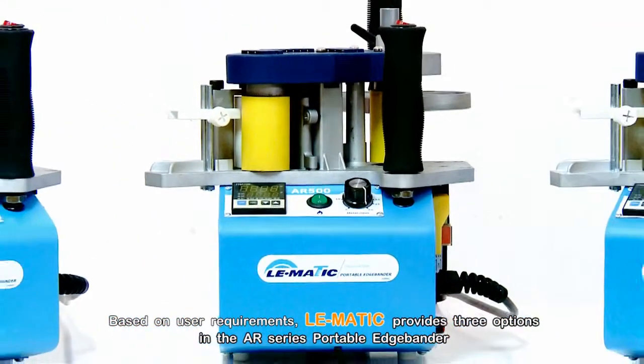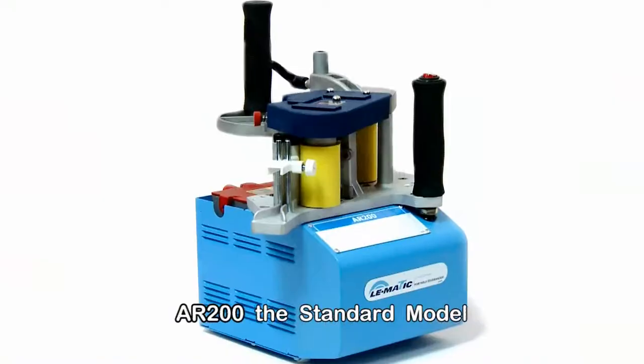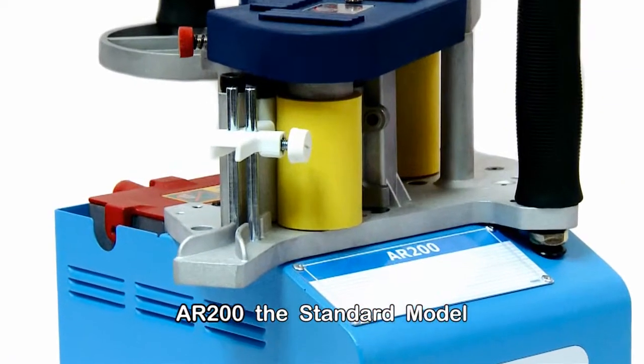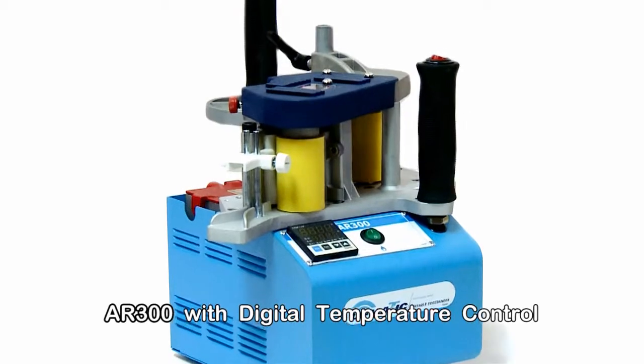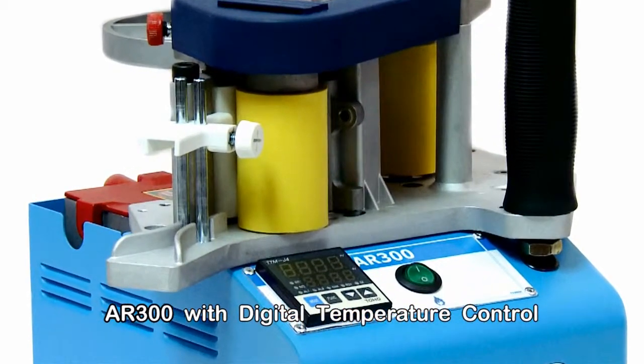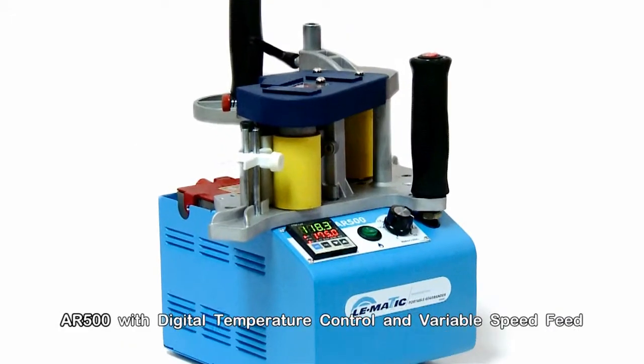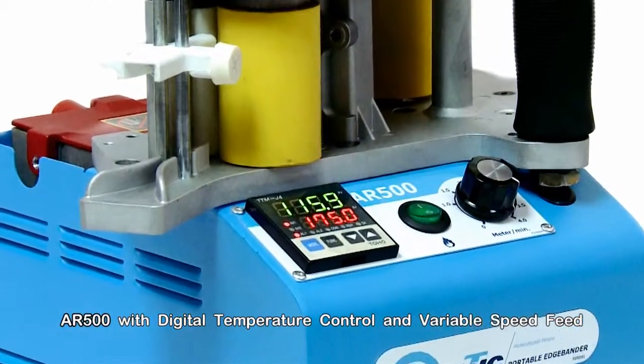Based on user requirement, Lomatic provides three options of the AR Series Portable Edge Bander. AR200, the standard model. AR300, the digital temperature control. AR500, the digital temperature control and variable speed feed.